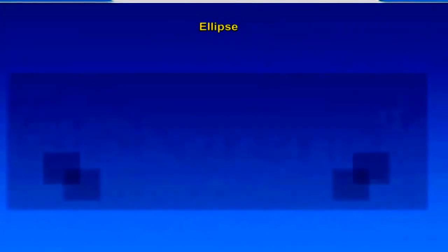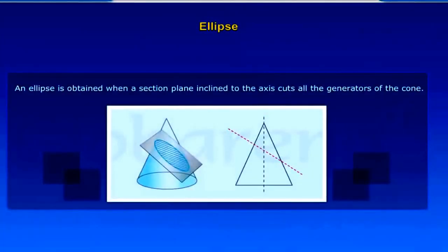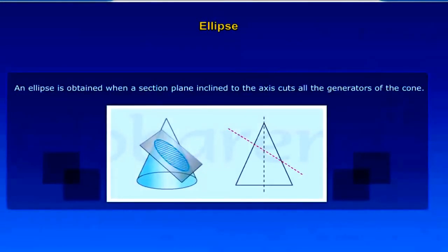Ellipse. An ellipse is obtained when a section plane inclined to the axis cuts all the generators of the cone.